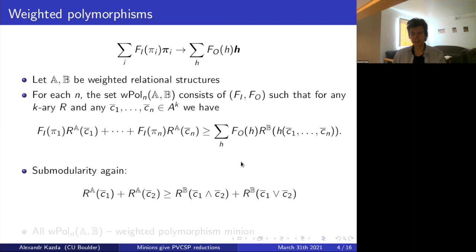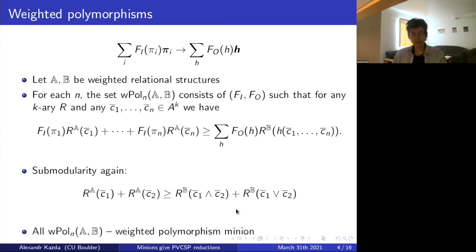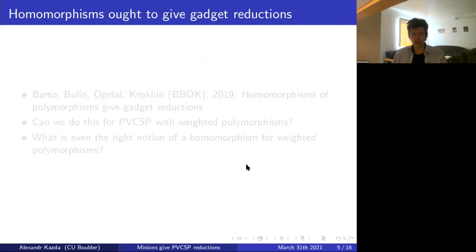For submodularity things become quite nice — that's probably how you would see submodularity in a CS paper. A relation is submodular if when I take any two tuples C1 and C2 in the relation, their cost is at most the cost of the bitwise AND of the two tuples together with the cost of the bitwise OR of the two tuples. Sneakily I'm changing A to B when going from the left to the right-hand side, but that's not really a big conceptual difference — it means I cannot compose, for example. The set of all weighted polymorphisms, as n goes from 1 to infinity, is the weighted polymorphism minion.